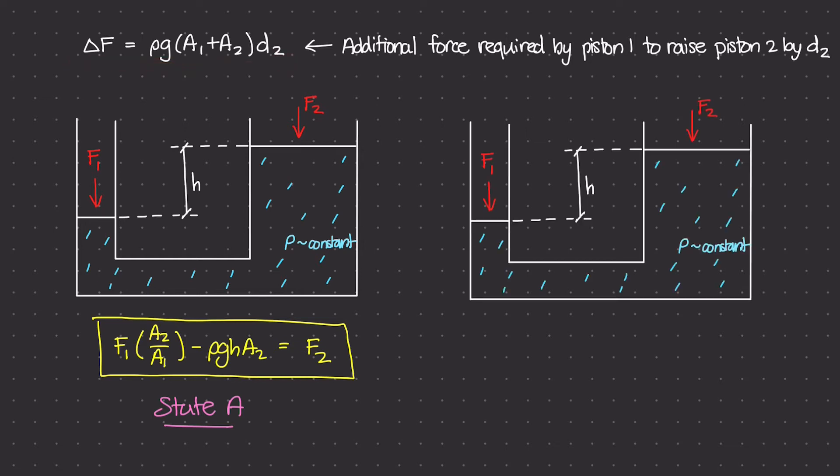Okay, so by the power of the magic of technology, this right here is going to be state B. So what is state B? So let's say we want to move piston 2, which is this piston right here.